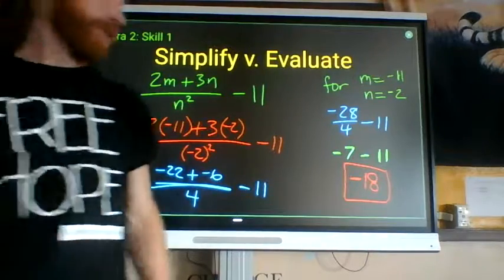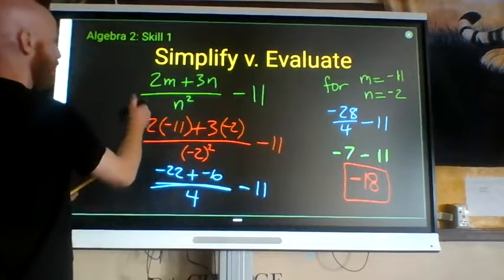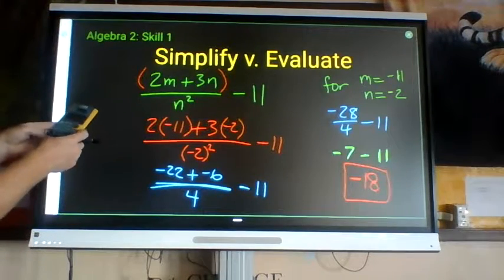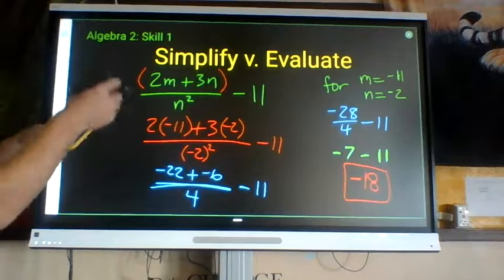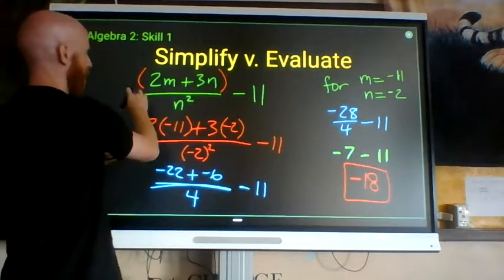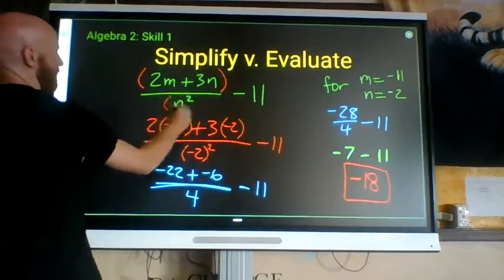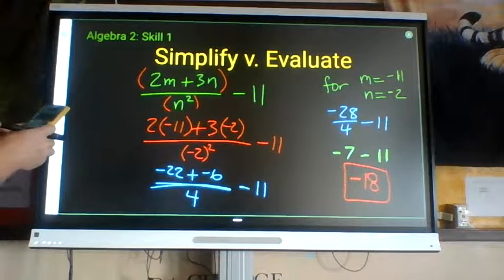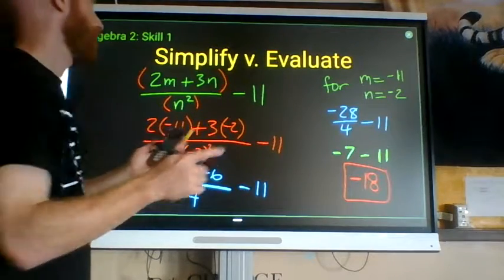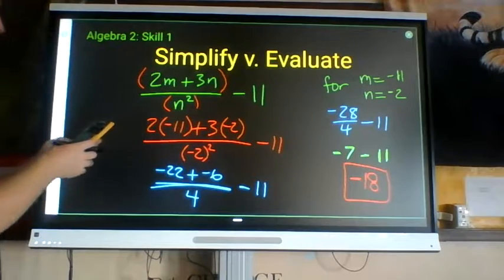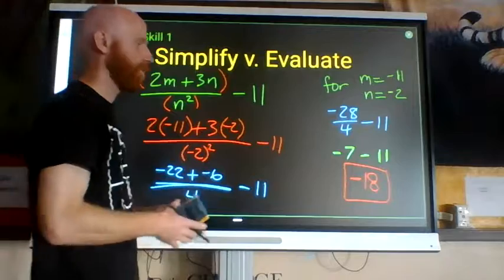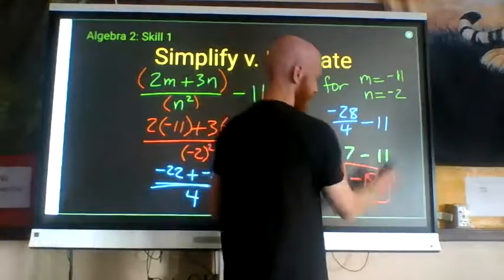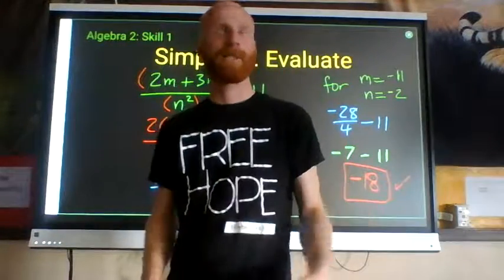Double-check with the calculator: type parenthesis 2 times negative 11 plus 3 times negative 2 close parenthesis, divided by, parenthesis negative 2 close parenthesis squared, minus 11. The calculator should return negative 18, confirming the answer. A checkmark lets me know I verified it, and I can move on confidently.